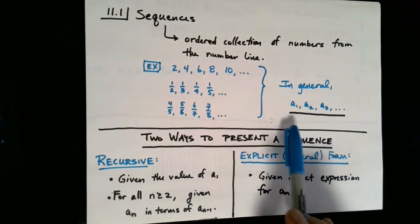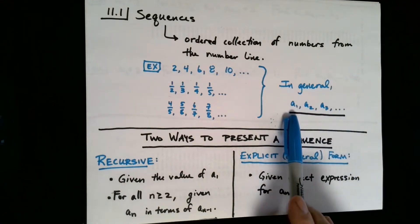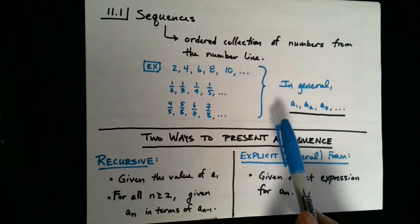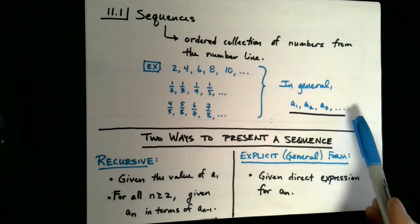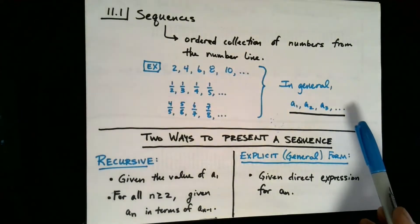So in general, whenever we phrase a sequence, we can use this notation: a₁, a₂, a₃, and so on, where a₁ is referring to the first number in the sequence, a₂ the second number in the sequence. In general, aₙ would be the nth number in the sequence. So a₁₀₀ would be the hundredth number in the sequence, and so on.